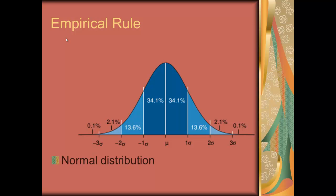What does one standard deviation above or below the mean mean? We have to go back to the empirical rule, which describes the frequencies seen in a normal distribution. Between the mean and negative and positive one standard deviations, there's 68% of the distribution — that is, two-thirds of the distribution of all people are within plus or minus one standard deviation. When you go out to two standard deviations, it goes up to about 98%, and at three, you have almost the entire distribution.